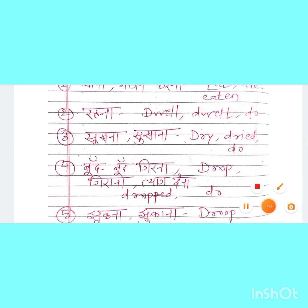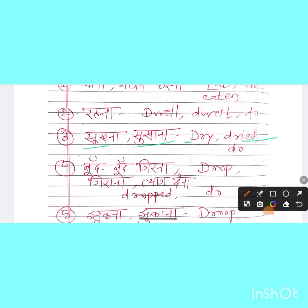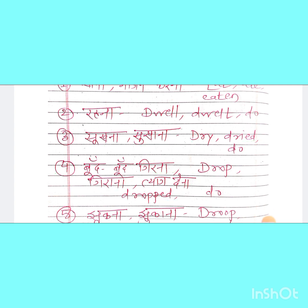तीसरा नंबर verb forms: सूखना या सुखाना — dry, dried, dried. चौथा: बूंद गिरना, गिराना, त्याग देना — drop, dropped, dropped.